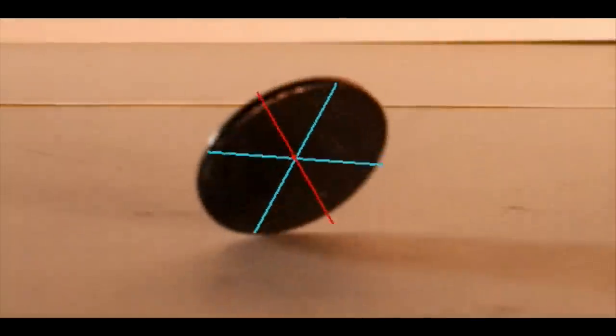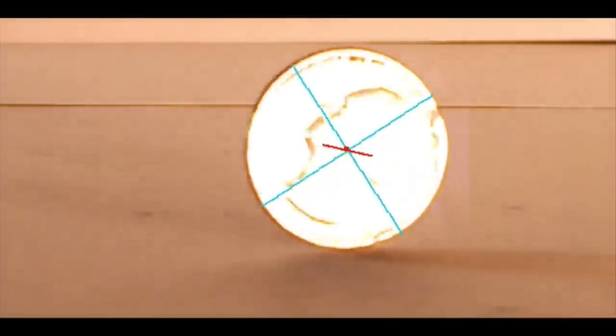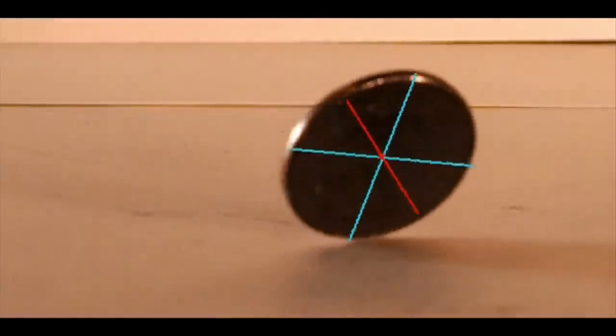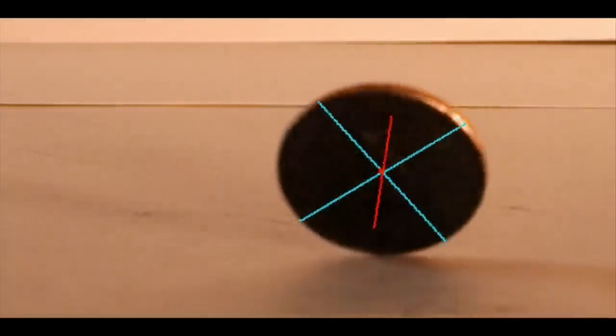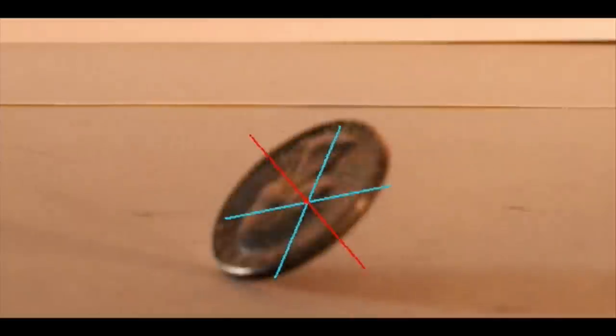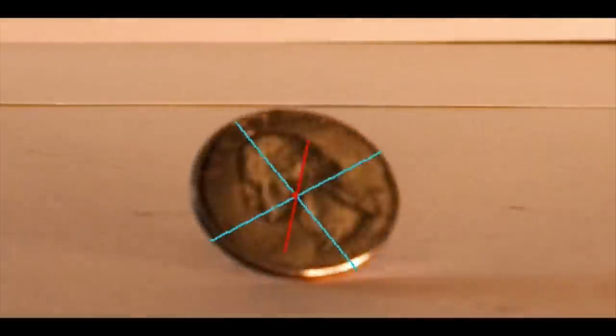The algorithms available use essentially a brute force approach to find the most defined ellipse in each frame and return these parameters. To minimize the error, the spinning coin was recorded against a simple background with as few other edges and features as possible.